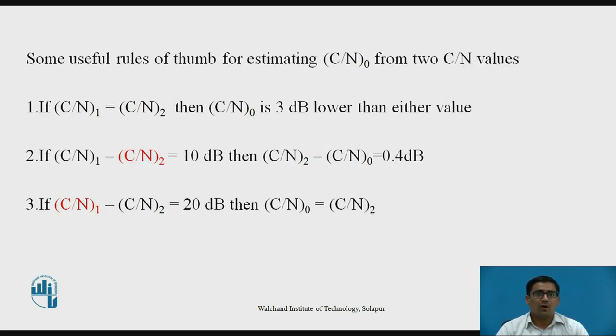Some useful rules of thumb for estimating C/N from two different C/N values: if two C/N values are the same, then overall C/N is 3 dB lower than either value. If the second C/N value is lower than the first by 10 dB, then overall C/N is less than the lower value by 0.4 dB. And if C/N_1 is more than C/N_2 by 20 dB, then overall C/N equals the lower one, C/N_2.